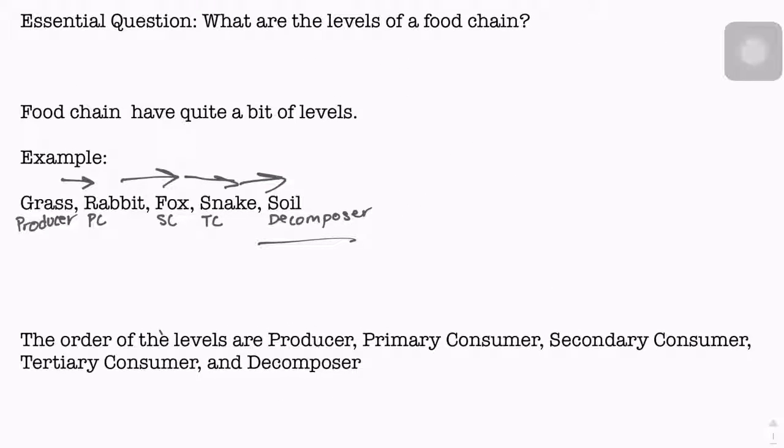Now, in the order of the levels: there could be more primary consumers, more secondary, more tertiary, more decomposers. That's all not in a food chain, that's all in a food web because there's different ways. So the order of the levels are: producer, primary consumer, secondary consumer, tertiary consumer, and decomposer. All these make up the food chain and all the energies that work with it.